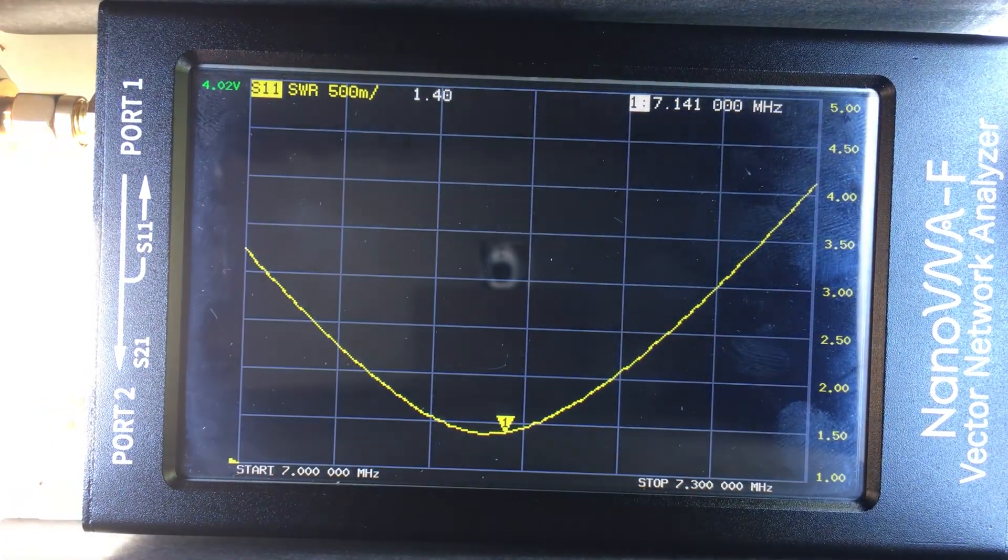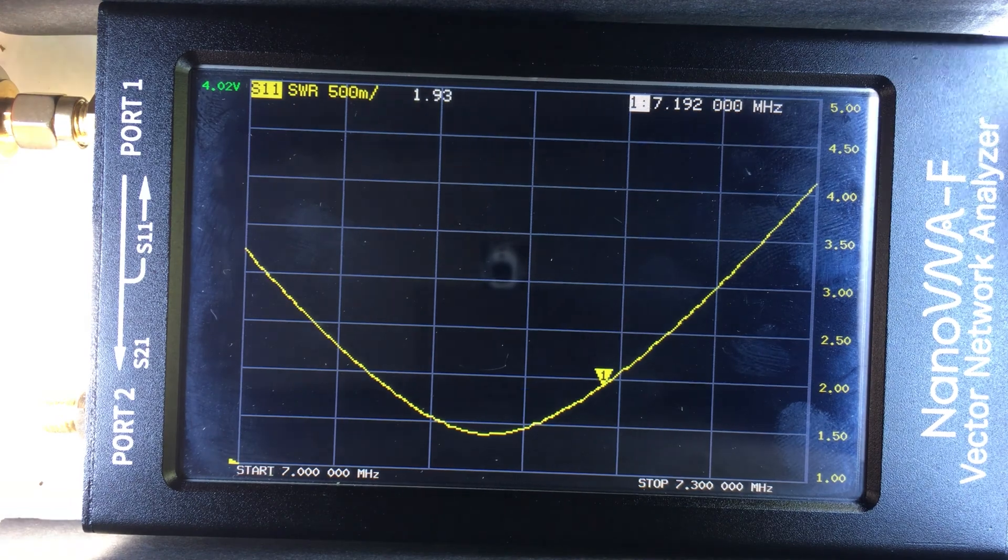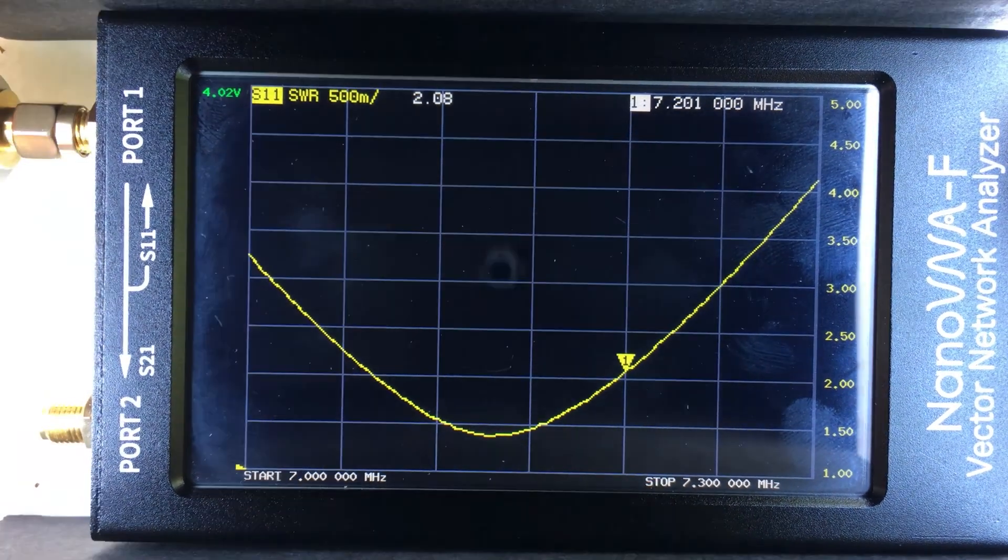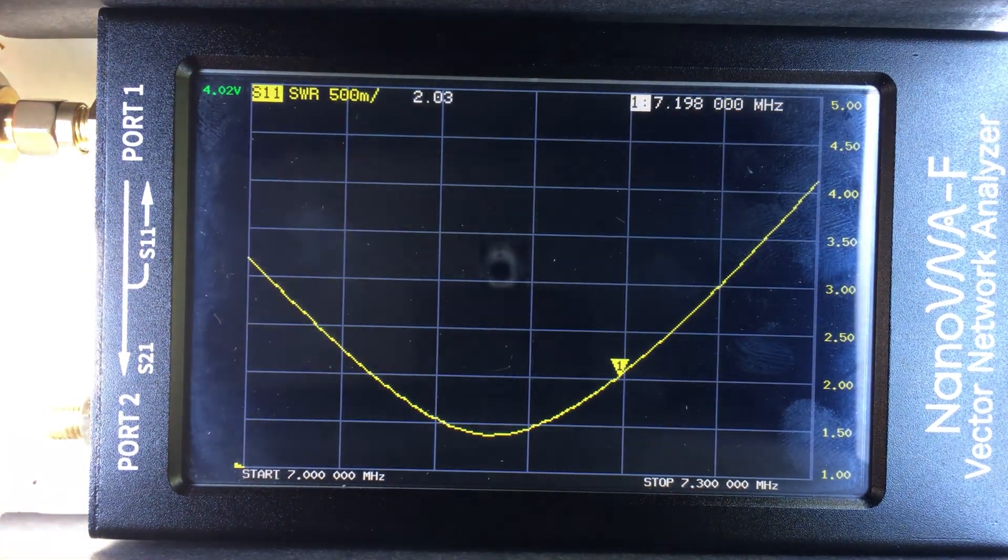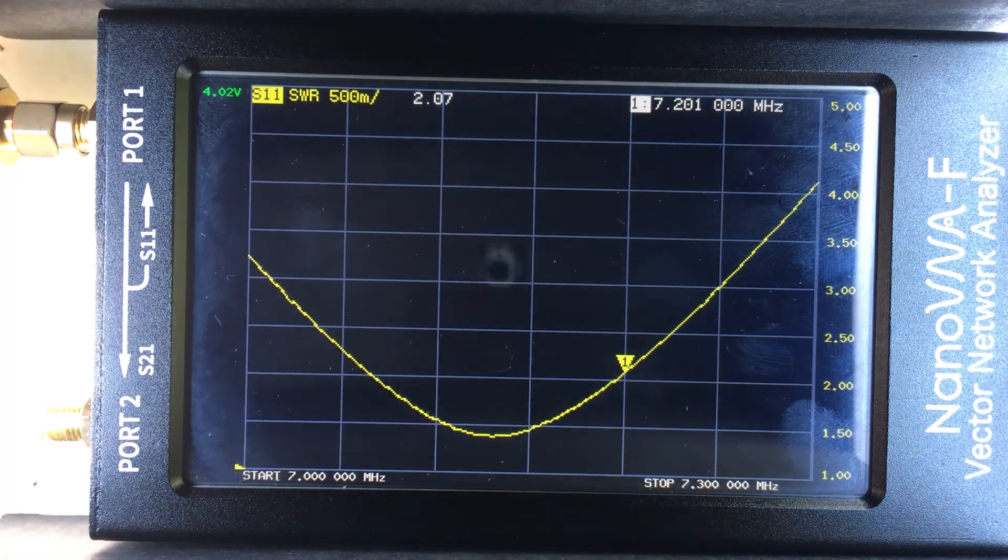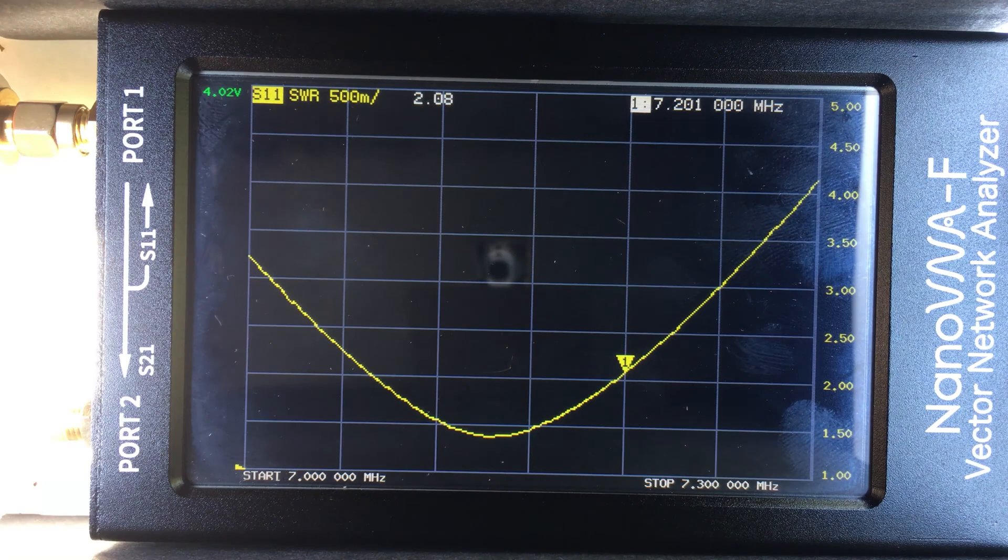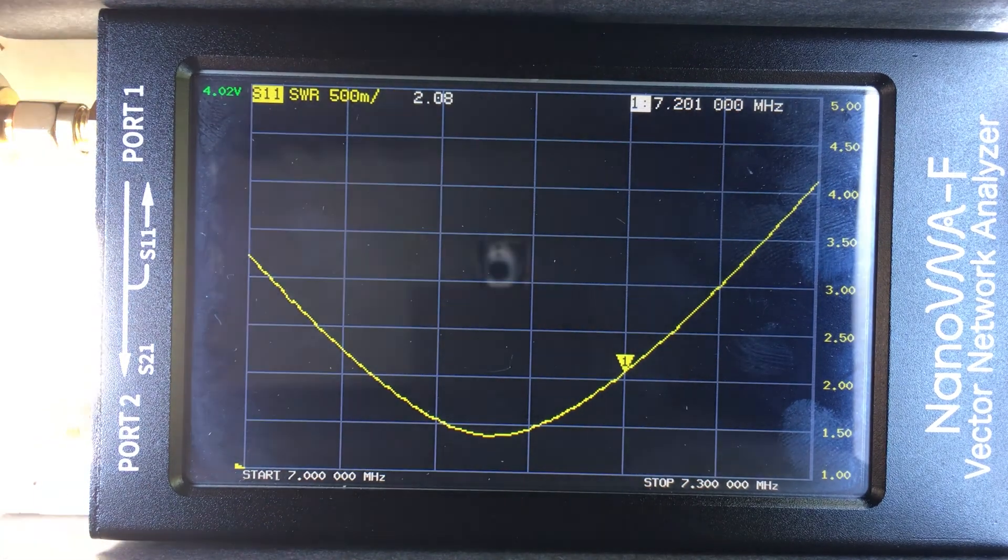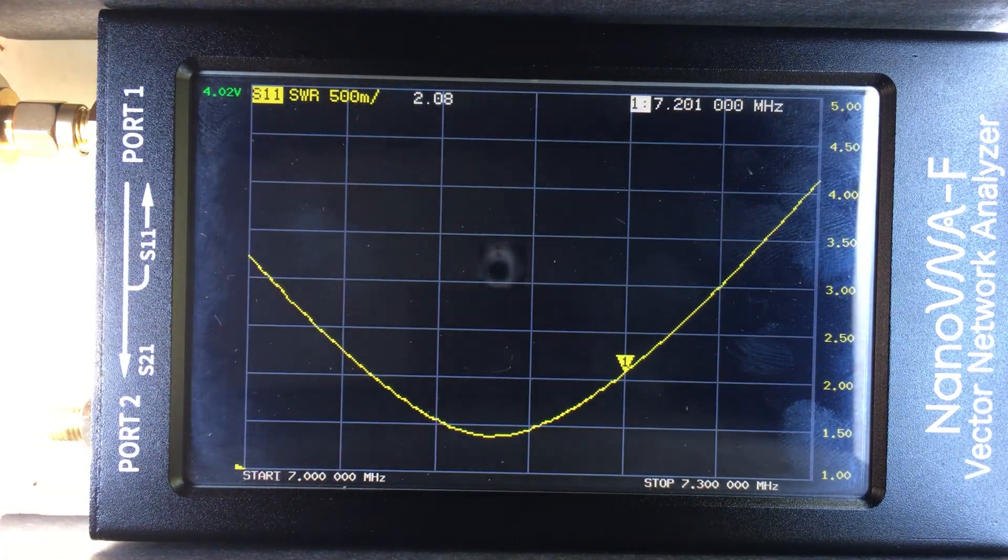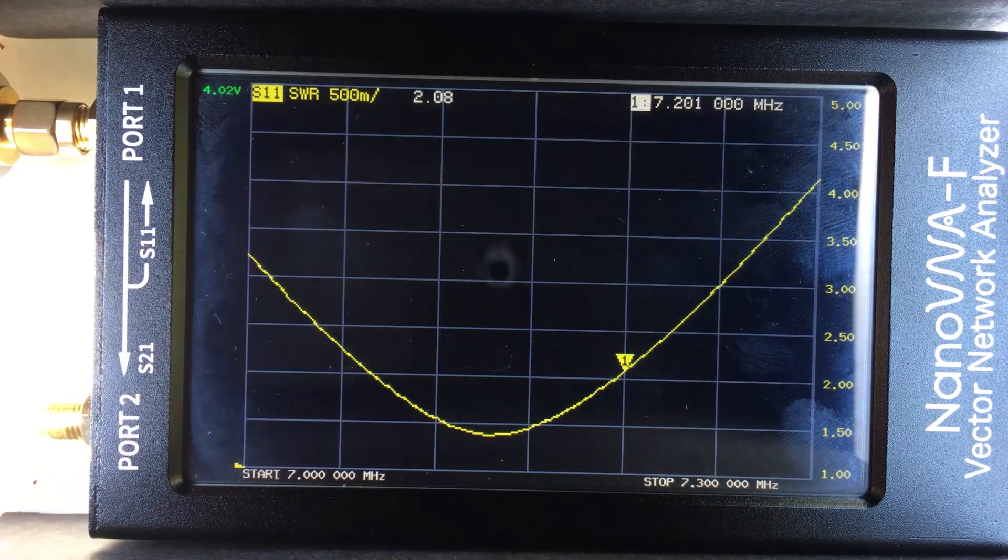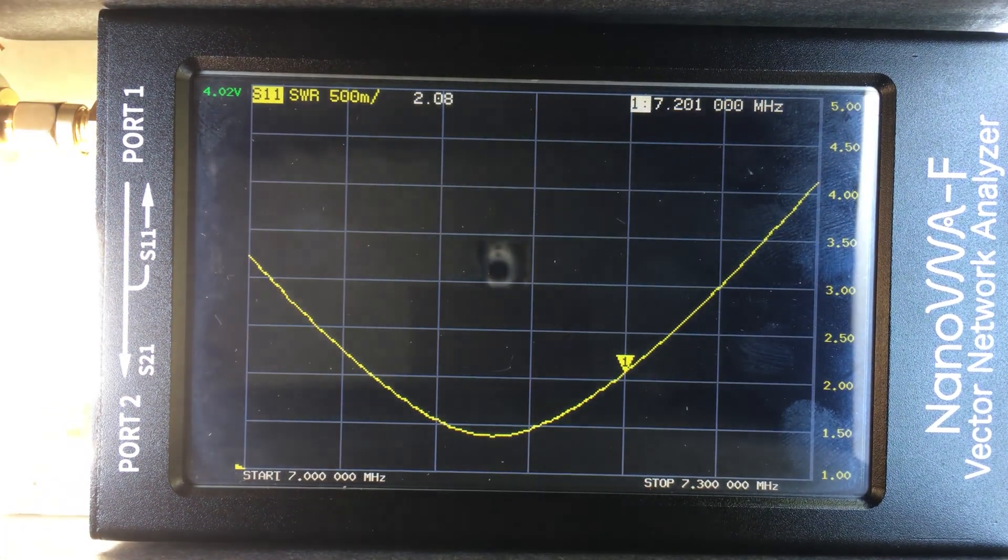Now, maybe if I wanted to, I might want to look at something like 7.2 megahertz and say, where's that at around 7.2? Depending on if you're doing CW or if you're going to be doing single sideband, just depends on what you're looking for and what your license privileges are, you might want to make some adjustments.